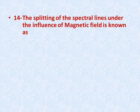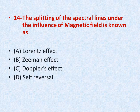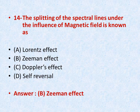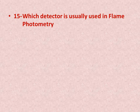Question number fourteen: the splitting of spectral lines under the influence of a magnetic field is known as — options: A is the Lawrence effect, B is the Zeeman effect, C is the Doppler effect, D is self-reversal. The right answer is B — the Zeeman effect.